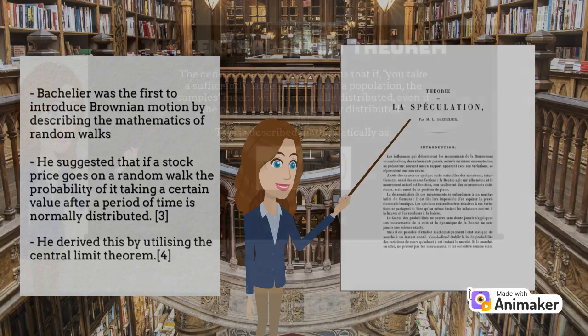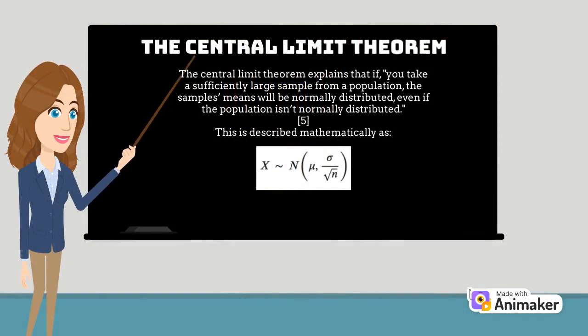The central limit theorem is derived mathematically as shown in the equation below, where X denotes the sampling distribution. N tells us this follows the normal distribution. Mu is the mean sampling distribution which is the mean of the population, and sigma divided by the square root of N is the standard deviation.